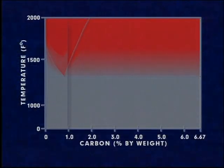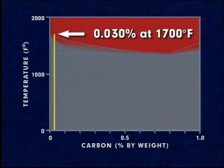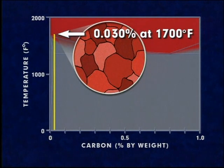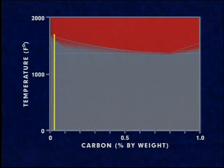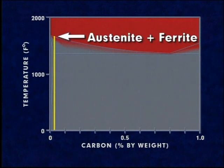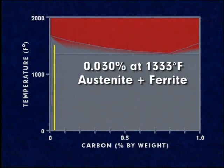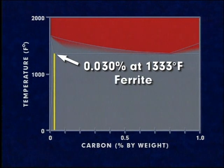Let's take a closer look at some examples of how carbon affects the hardness of steels. If steel containing 0.030 percent carbon is heated to about 1,700 degrees Fahrenheit, the structure will consist entirely of austenite. If it is then cooled slowly at about 1,650 degrees Fahrenheit, the austenite begins to transform to ferrite. As cooling continues, more and more ferrite is formed, until at 1,333 degrees Fahrenheit, the remaining austenite transforms completely.